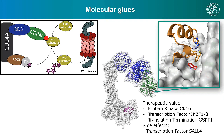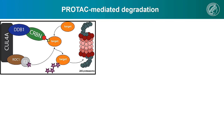However, the same mechanism of action was also suggested for SALL4, whose degradation is likely the cause for limb deformation seen in newborns when thalidomide was used during pregnancy.